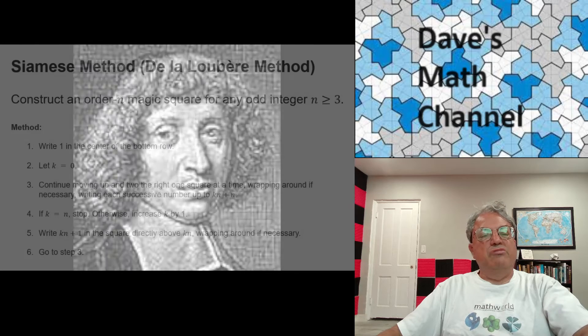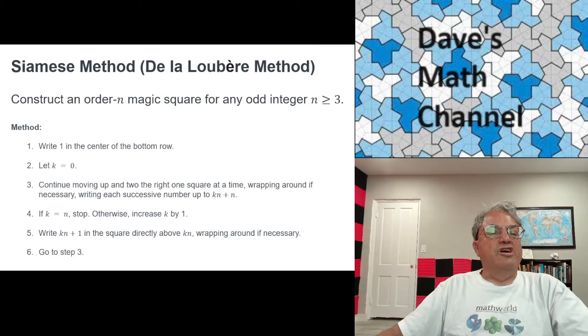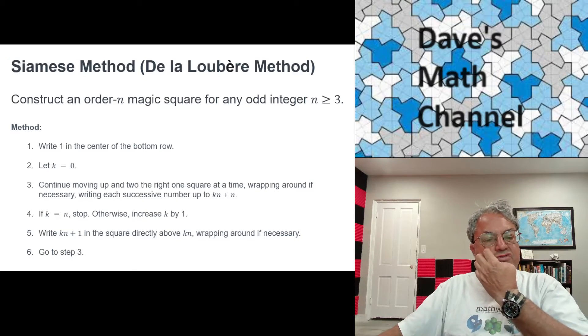Anyway, let me describe the method to you. So here's an algorithm I've written down for how to use the method. It's not a difficult method. Maybe this looks a little difficult the way I've written it, but here's the idea. You always start for any magic square of odd order, you draw an n by n square, where you're going to put all your numbers, an n by n array, if you like. You always start with a one in the middle of the bottom row. So that's where you write the first number.